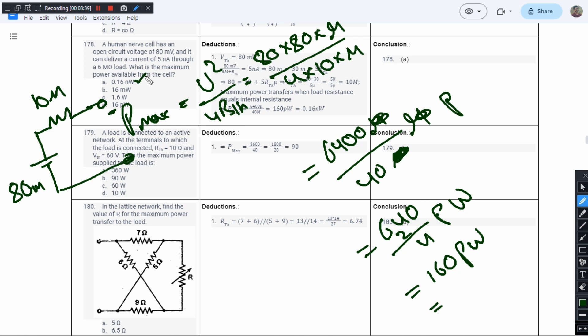Let's change the units. If we convert to nanowatts, it will be 160 divided by 1000 nanowatts, which equals 0.16 nanowatts. Option A says 0.16 nanowatts.